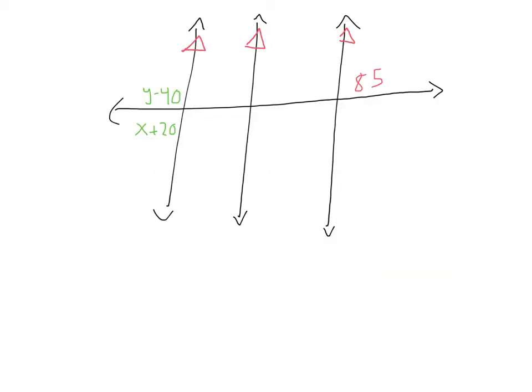Okay, here we've got one long transversal with three parallel lines. First, let's look at any relationships we can find. Here I see we've got a linear pair with x plus 20 and y minus 40. So I know that those two angles are going to have to add to give me 180 degrees. So I have y minus 40 plus x plus 20 equals 180.